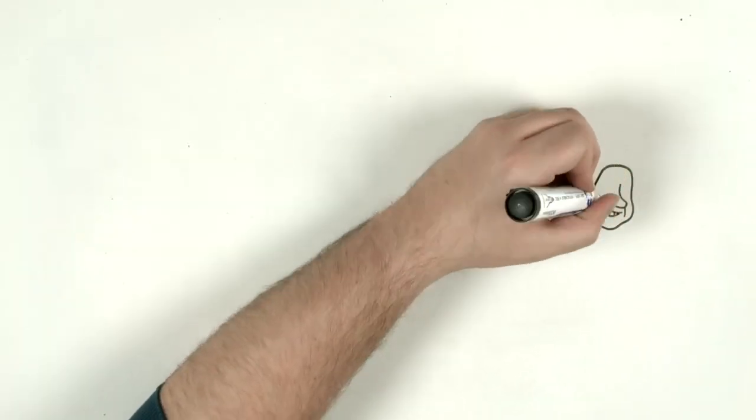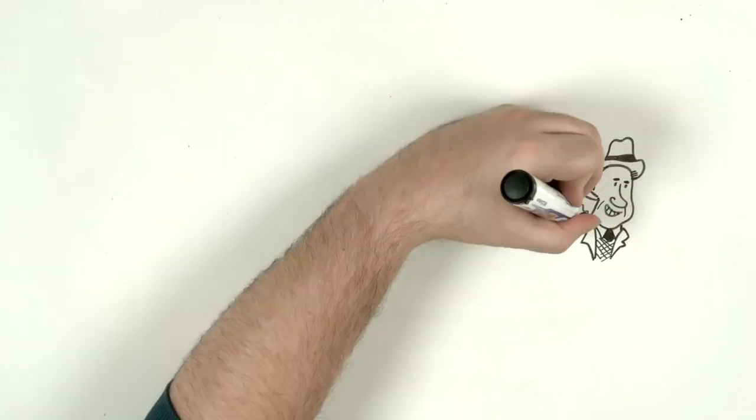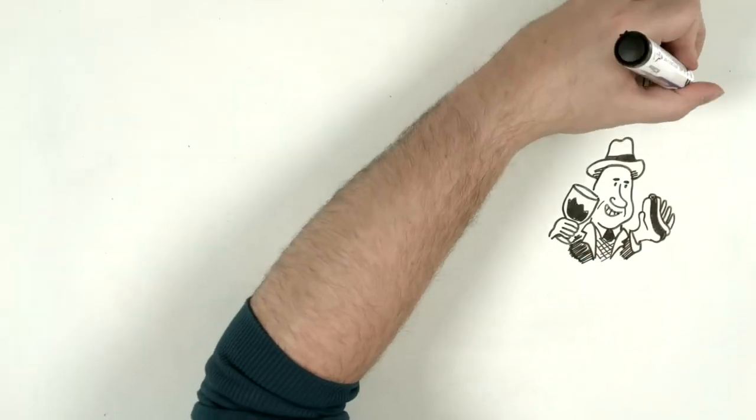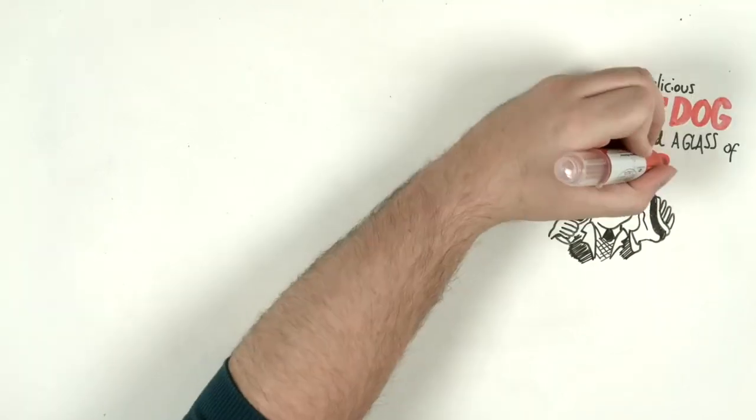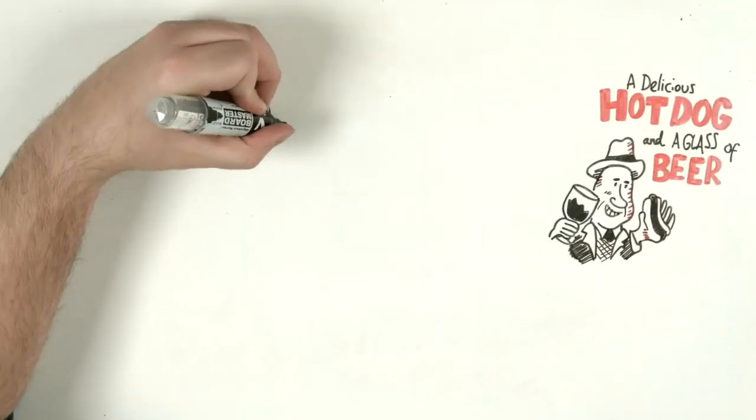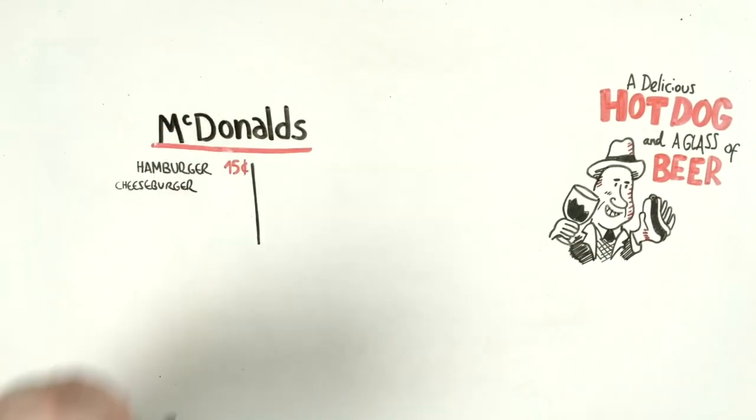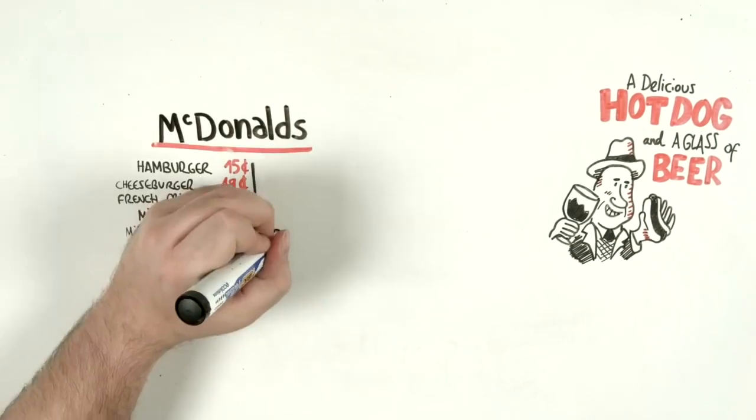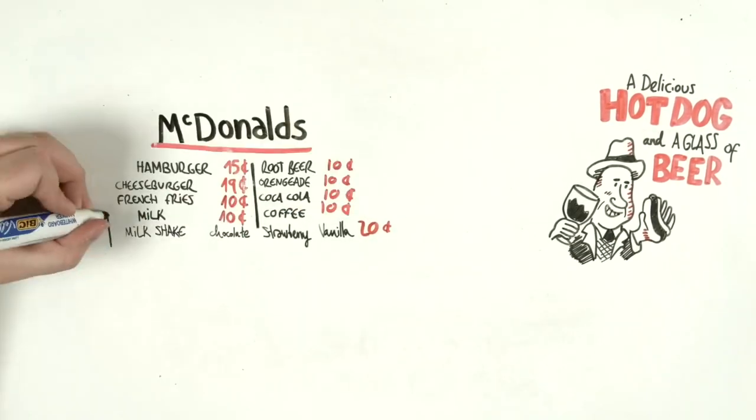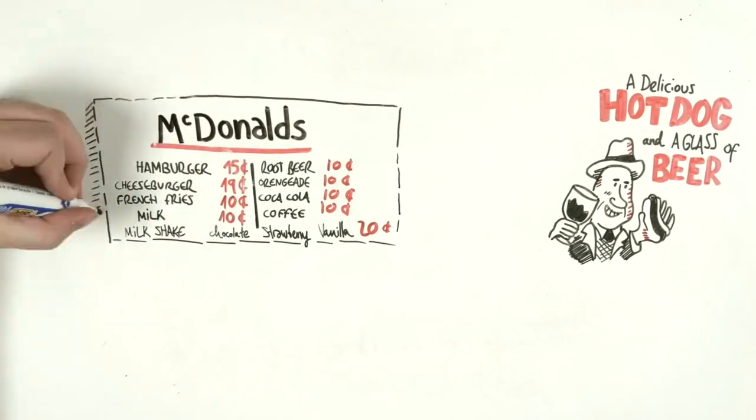The first thing they did was realize that 80% of what they sold were hamburgers. So they removed the 25 dishes and left only hamburgers, fries, and milkshakes, and created a unique assembly line, reducing the waiting time from 20 minutes to 30 seconds, making all hamburgers come out the same. They had invented the concept of fast food.